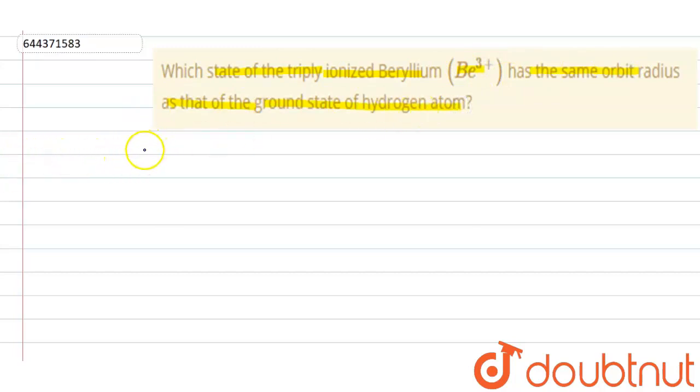In this question, we are given two ions. First is hydrogen atom and second is beryllium ion. Now, let us assume beryllium ion to be 1 and hydrogen to be 2nd. Here it is given which state,